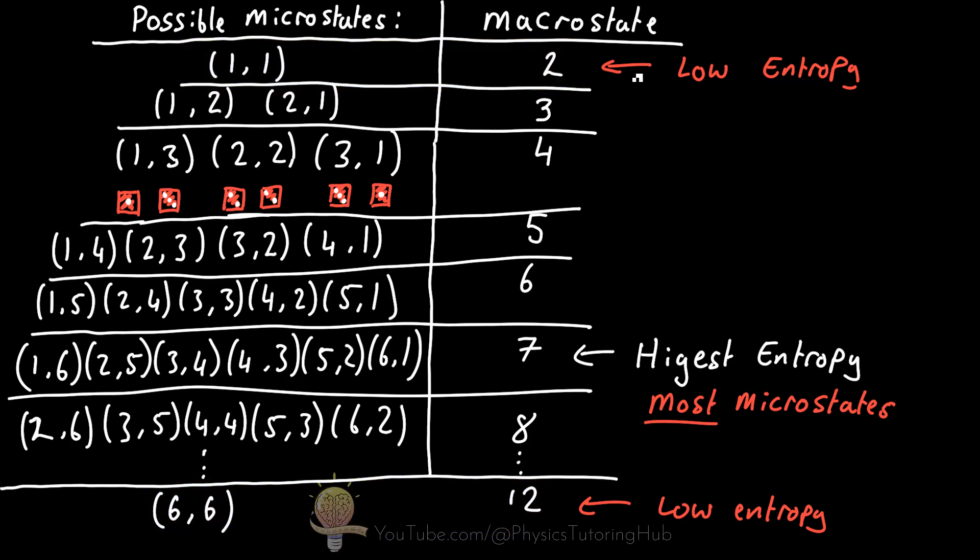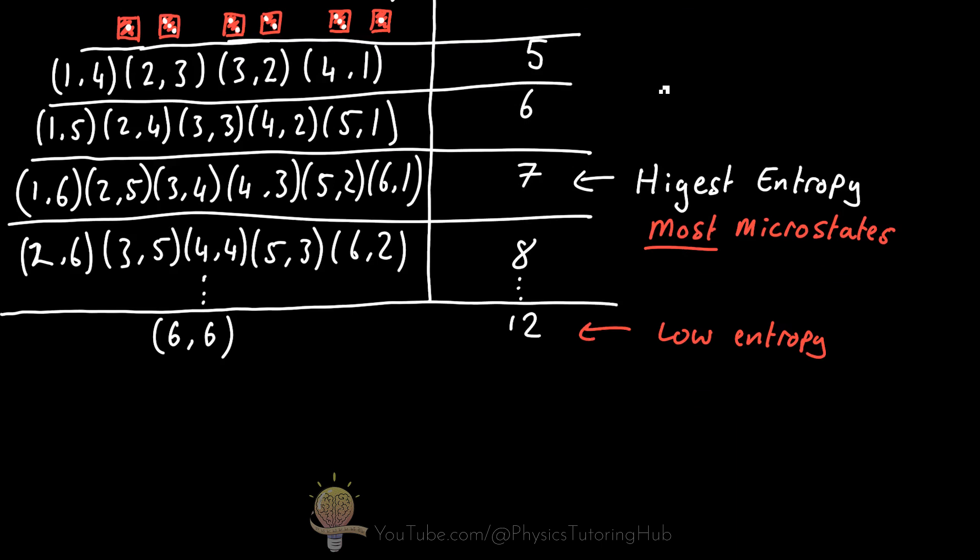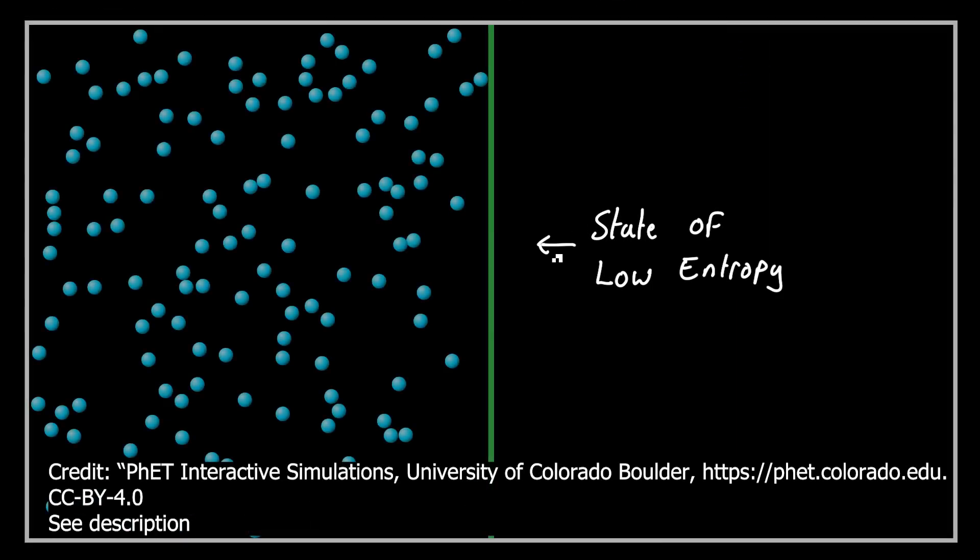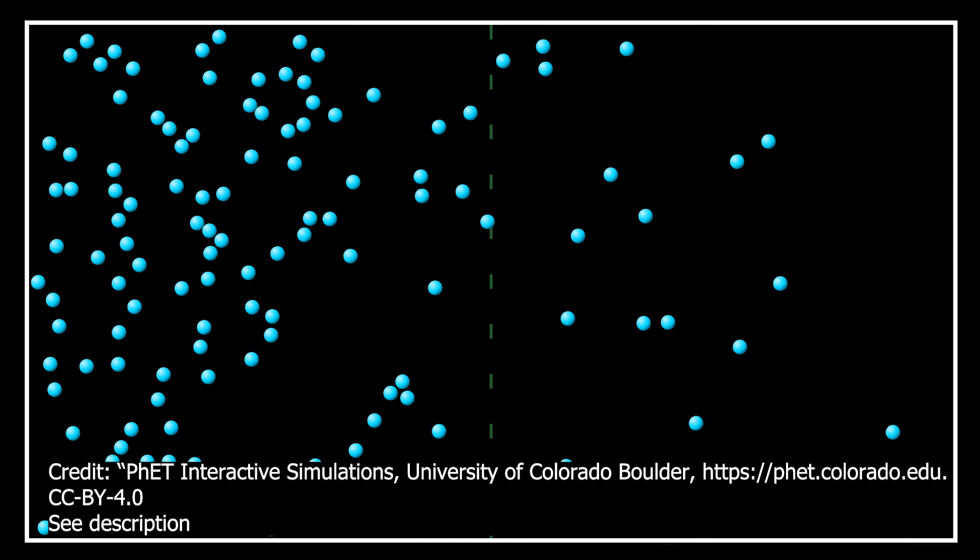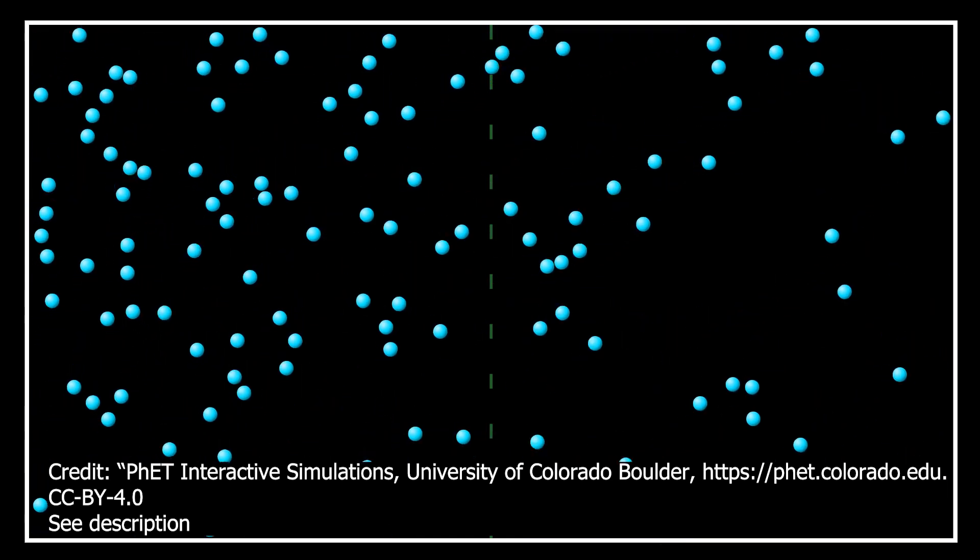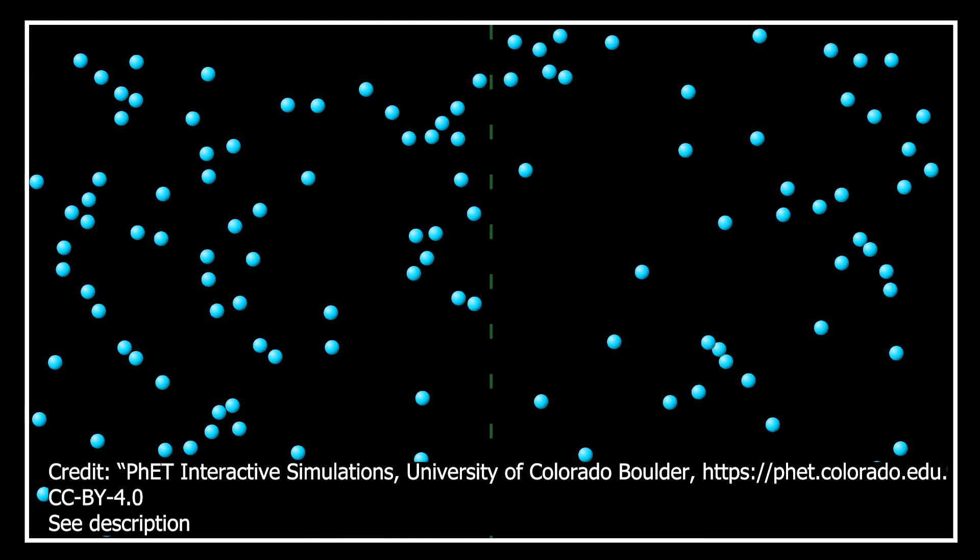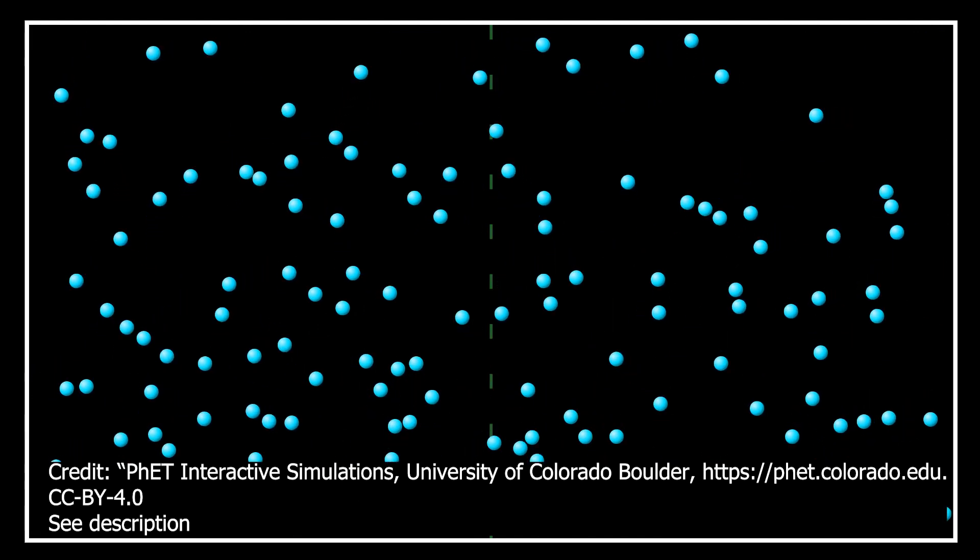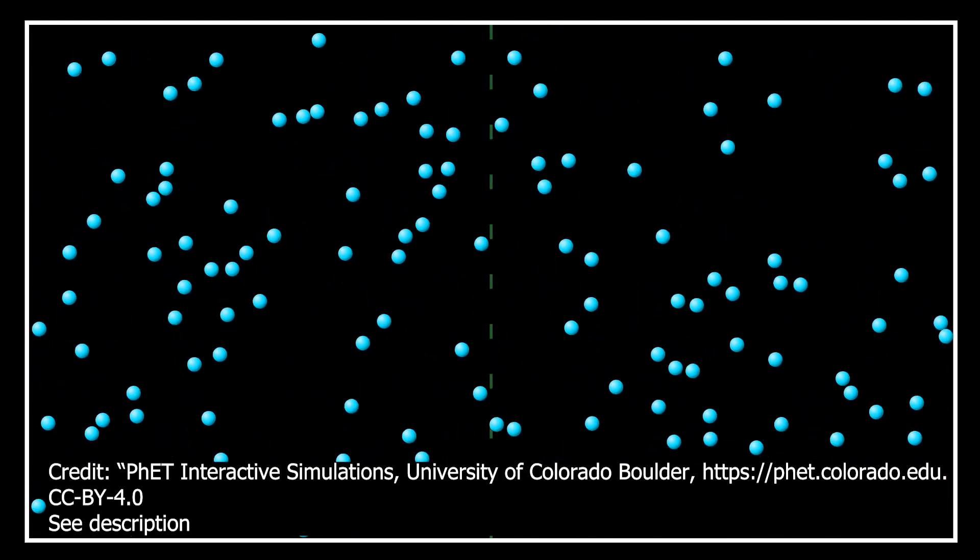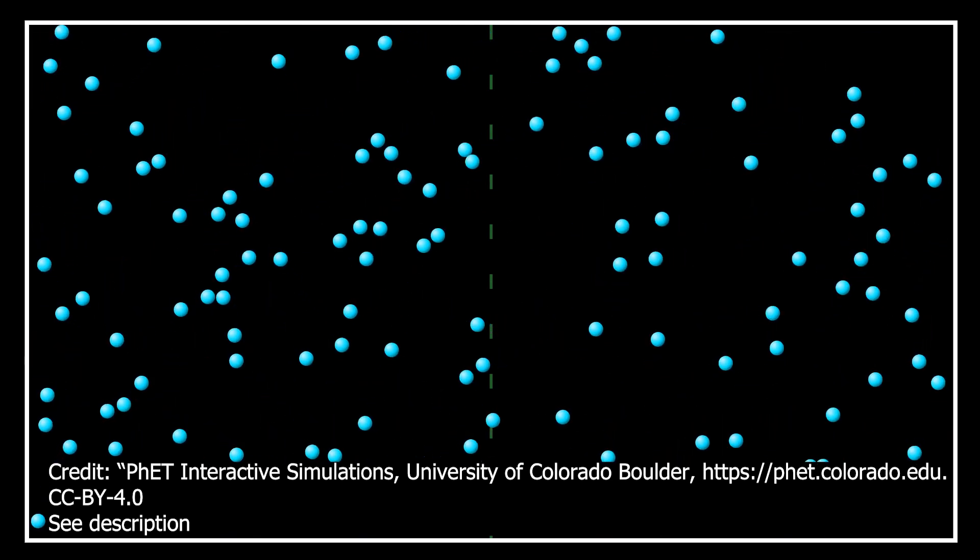And finally, to make this concept concrete, imagine a container of gas with a divider in the middle. When the gas is confined to one side, it has a low entropy because there are fewer ways to arrange the molecules in this confined space. In other words, there are fewer microstates. When the divider is removed, the gas can spread out, filling the container and increasing the system's entropy. This particular macrostate has far more microstates because there are many more ways the particles can arrange themselves in this larger volume.